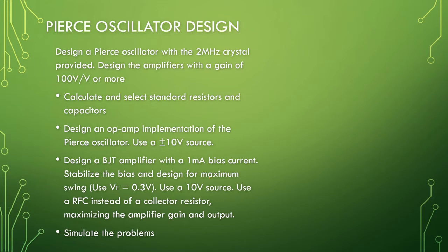The problem that you can pause the video on is to design a Pierce oscillator with a 2 megahertz crystal. Design the amplifiers for 100 volts per volts gain or more. Calculate and select standard resistors and capacitors for the designs. Do a design for an op amp. I am using a plus minus 10 volt source. And then do a BJT design biased at 1 milliampere. Stabilize the bias. Design for maximum swing but use an emitter voltage of 0.3 volts. Use a 10 volt source for the supply and a RF choke instead of a collector resistor so the output is maximized. Please simulate the problems. Pause and I will be back with a solution in a moment.